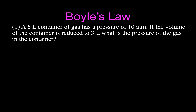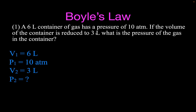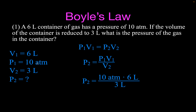Here is our first example using the Boyle's Law equation. A 6-liter container of gas has a pressure of 10 atmospheres — that's our initial volume and pressure. If the volume of the container is reduced by cutting it in half, what will the new pressure be? I wrote the numbers down first, and I have my equation. I want to solve for P2, so I divide both sides by V2 and plug the values in: 10 atmospheres initial pressure, 6 liters initial volume, divided by the final volume of 3 liters. 10 times 6 is 60 divided by 3 is 20 atmospheres. If you cut the volume in half and squeeze the gas into half the volume, then the pressure is going to increase.